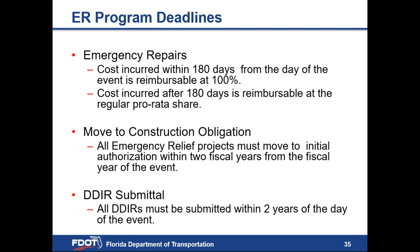One of the best practices we've implemented in District 5 is including key dates in event notification emails. For your emergency repairs, costs incurred within the first 180 days from the day of the event are reimbursable at 100%. Costs incurred after 180 days are reimbursable at the regular pro rata share. All ER projects must move to initial authorization within two fiscal years from the fiscal year of the event. DDIRs must be submitted within two years of the day of the event.